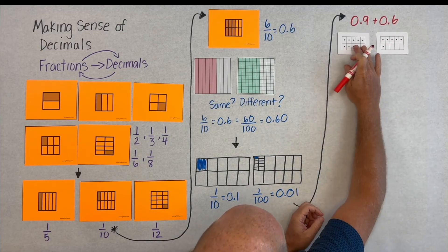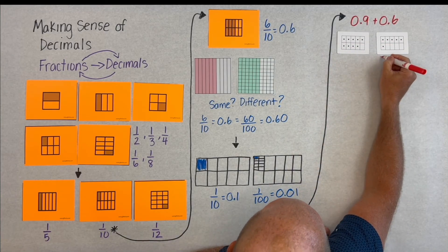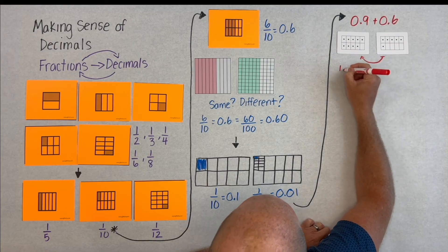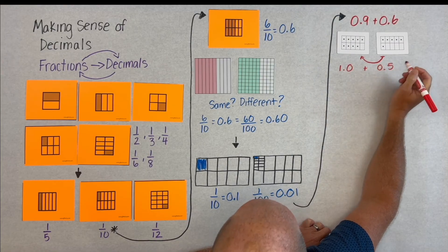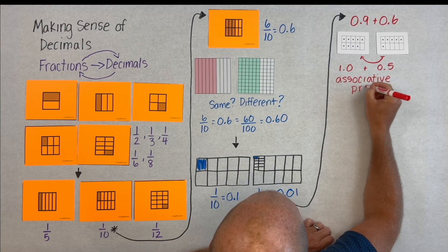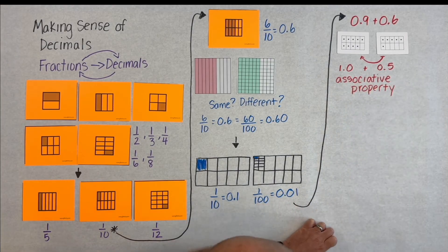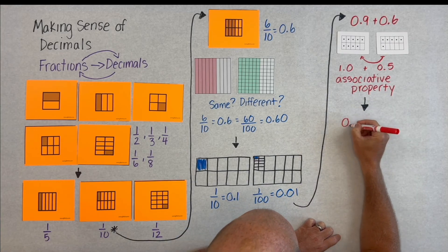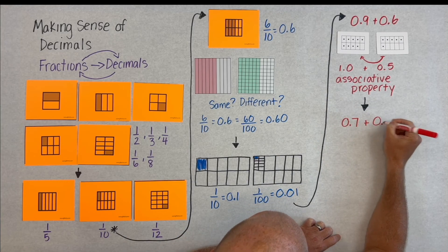So, then when we get into operations of decimals, we can use that associative property. Or, in kindergarten and first grade, it's like make a ten. But here we can apply and scale up that thinking, where we take one-tenth from the six-tenths, give it to the nine-tenths to make a whole. And now we have one whole ten-frame and five-tenths of our next ten-frame.